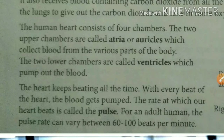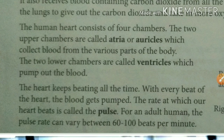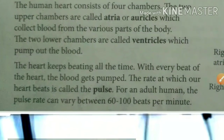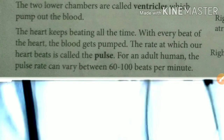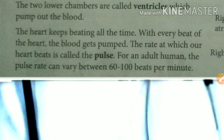The human heart consists of four chambers. The two upper chambers called atria collect blood from the various parts of the body. The two lower chambers called ventricles pump out the blood. The heart keeps beating all the time, and with every beat the blood gets pumped and a cycle is completed.